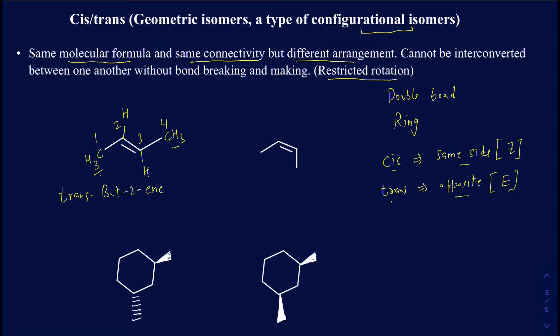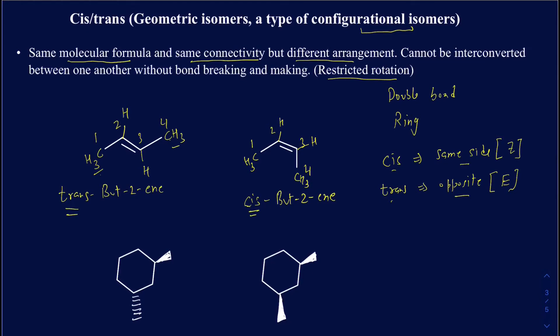Looking at the next example, everything else is the same — four carbons, the double bond position is also the same. However, the methyl groups are now on the same side, and the hydrogens are on the opposite side. Since the methyl groups are on the same side, you can say the big groups are on the same side, so it's going to be a cis alkene. I'm going to call this cis-2-butene. It's only the first part — cis or trans — that changes in these geometric isomers.